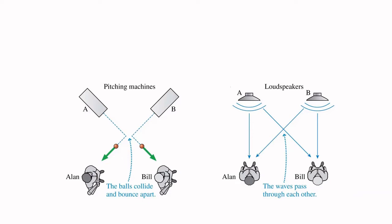I like this little example that your book brings up. They point out that for something like two baseballs being launched from a batting cage, if they're crossed like this, that's not going to work if the balls are fired at the same time because they'll bounce off of each other. You can't have two massive objects occupying the same space at the same time.